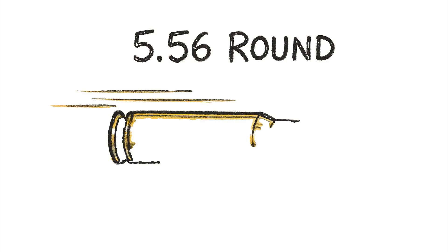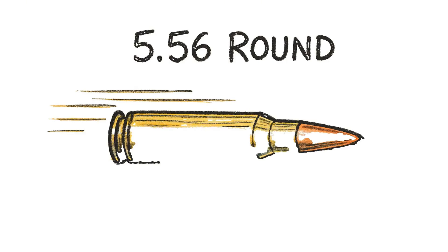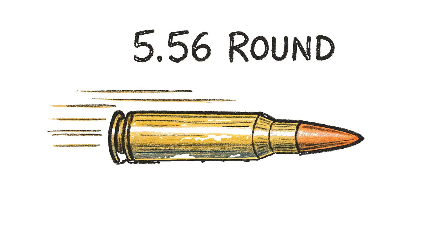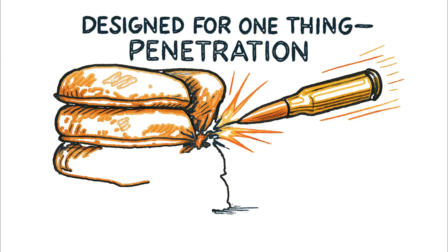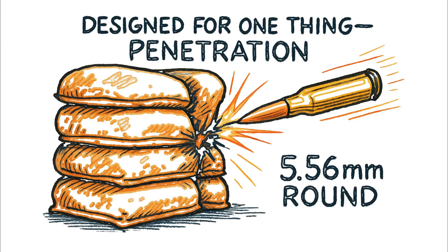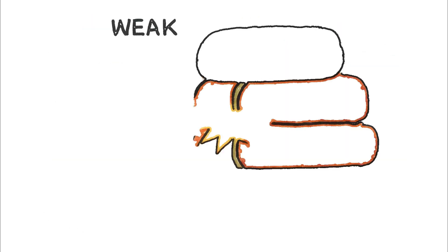Next, consider the 5.56 round, a projectile that is smaller and lighter than the 9mm, but moving roughly three times faster, and since kinetic energy is mass times velocity squared, that speed makes all the difference. This little round is designed for one thing, penetration. And against this flawed model, the results will be dramatic, with the impact point once again at the weak seam.